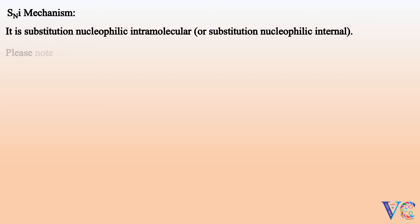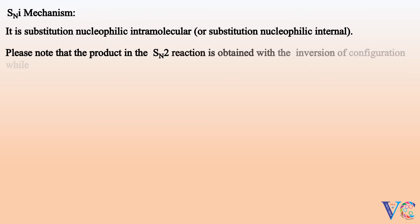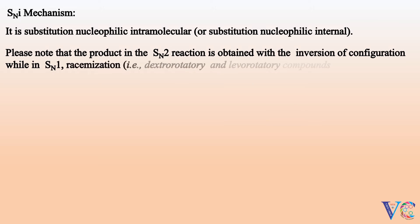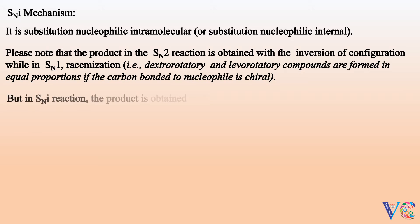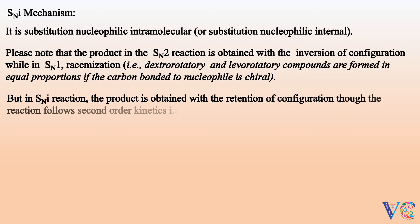Please note that the product in the SN2 reaction is obtained with the inversion of configuration, while in SN1, racemization — i.e., dextrorotatory and levorotatory compounds are formed in equal proportions — if the carbon bonded to the nucleophile is chiral. But in the SNI reaction, the product is obtained with the retention of configuration, though the reaction follows second order kinetics, that is, bimolecular, like SN2.